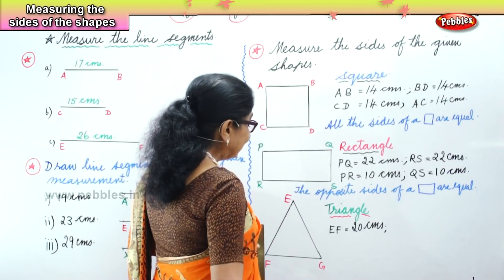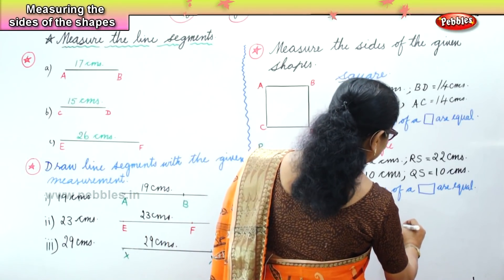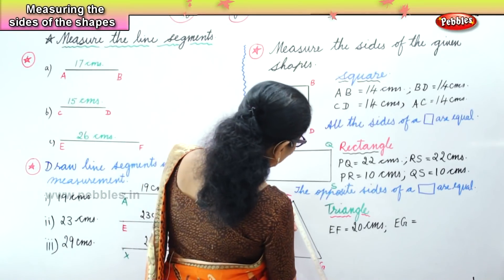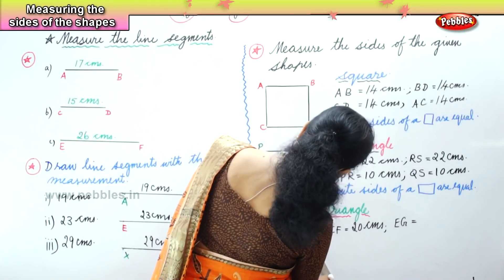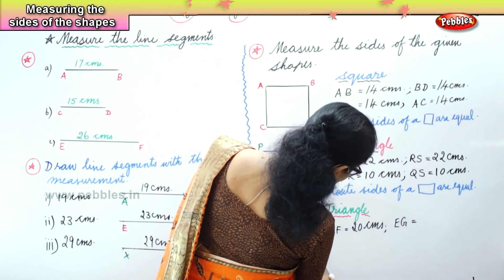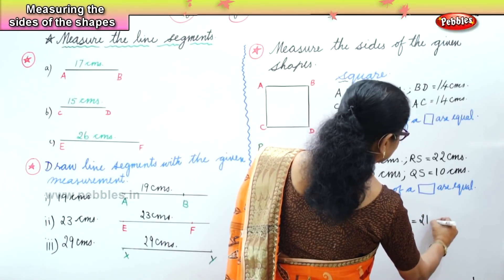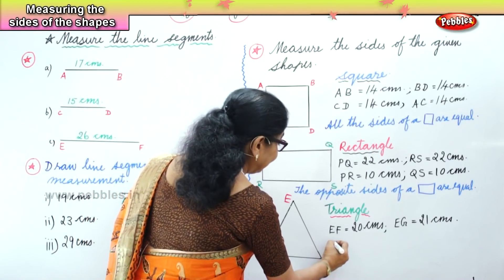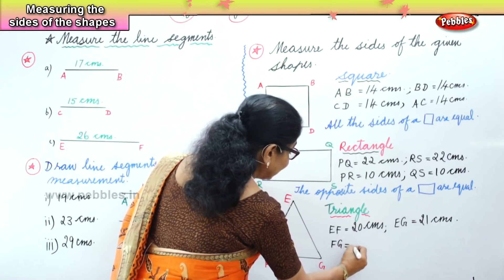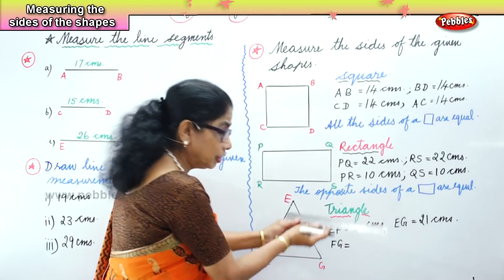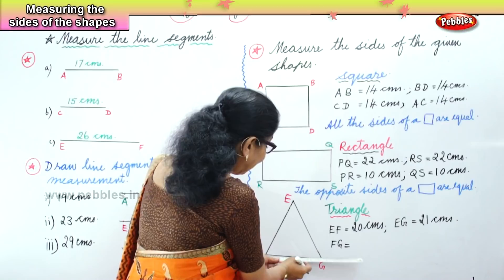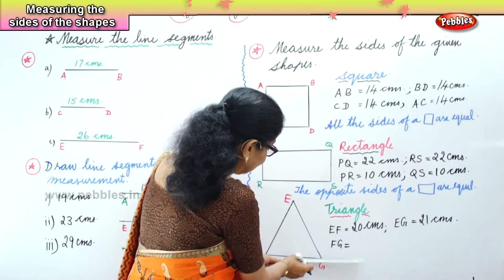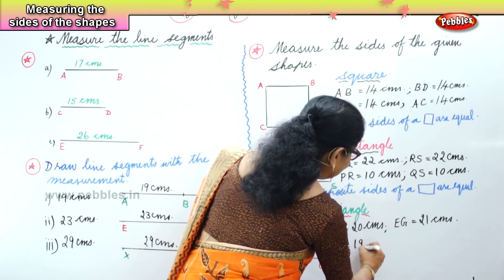Now we will measure line segment EG — take the ruler, put the zero on point E and look — it is 21 centimeters. Now we will measure line segment FG. Take the ruler, put the zero on point F and look at G — it is 19 centimeters.